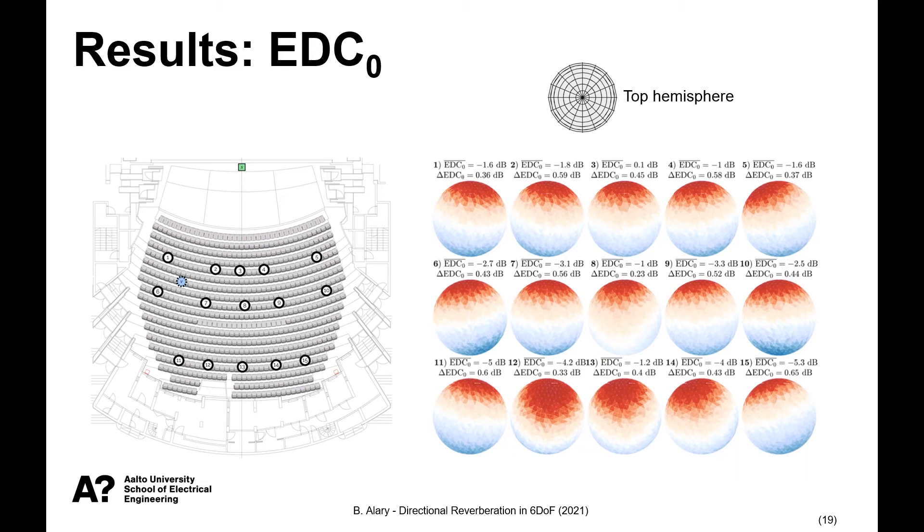So now let's look at some results. Here we have a very compact representation of location dependent and direction dependent EDC zero. Each sphere that we're observing from the top hemispheres corresponds to each of the 15 data points in this layout. So we're looking from the same perspective, meaning that the sound source is towards the top. The color of each sphere indicates how much deviation to a mean in white. So red represents a stronger EDC zero and blue a weaker amount of energy in the EDC zero. The mean and deviation of each sphere is indicated for each.